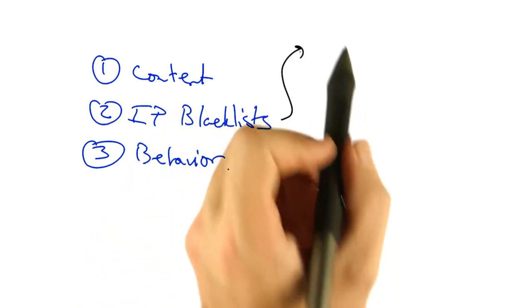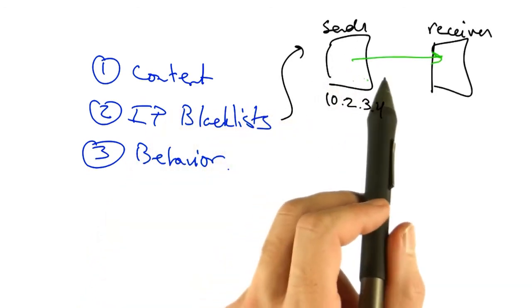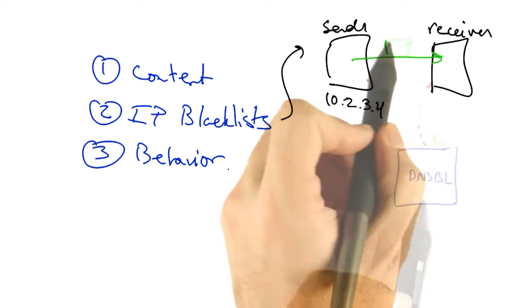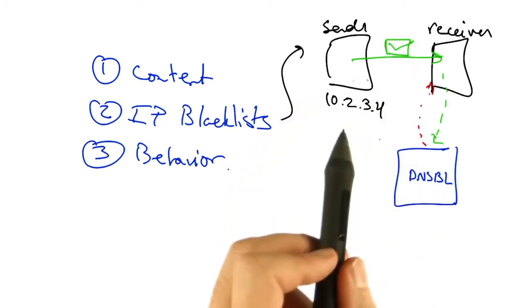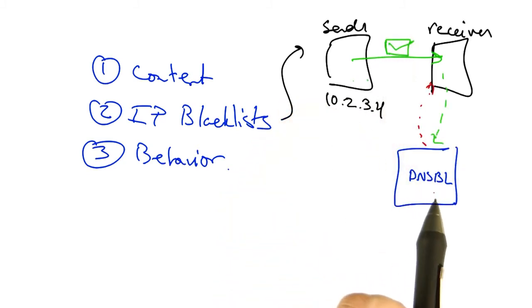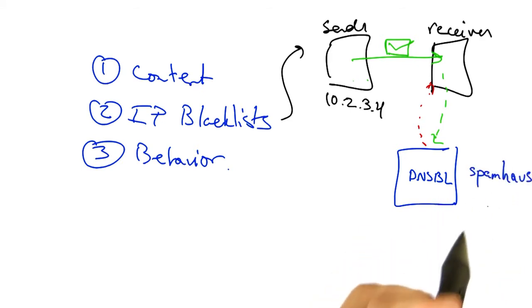Well first, the way an IP blacklist works is that when a sender sends an email to the receiver, the receiver sends a query for that IP address to a blacklist, or a DNS-based blacklist, sometimes called a DNSBL, such as Spam House.